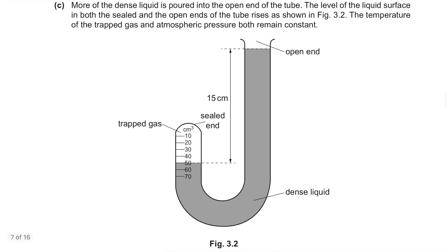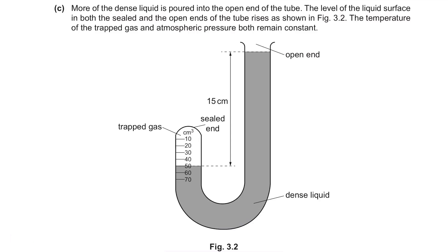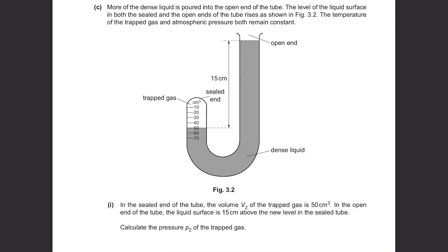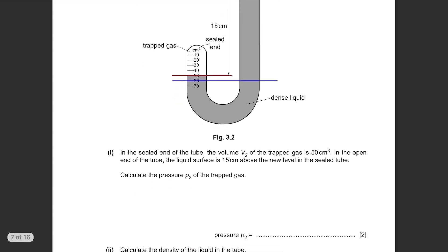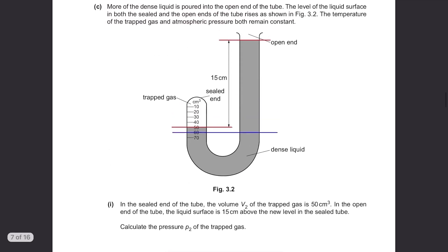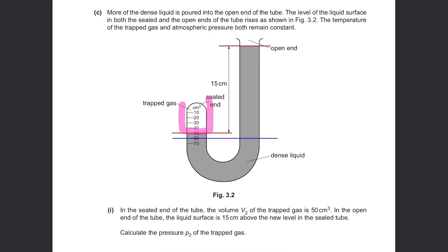Part C. More of the dense liquid is poured into the open end of the tube. The level of the liquid surface in both the sealed and the open ends of the tube rises as shown in figure 3.2. The temperature of the trapped gas and the atmospheric pressure both remain constant. The levels increased from this to this. In the sealed end of the tube, the volume V2 of the trapped gas is 50 cm3. In the open end of the tube, the liquid surface is 15 cm above the new level in the sealed tube. Calculate the pressure P2 of the trapped gas. Alright, sounds confusing because it's a long question but we can sort it out. Just focus on the before and after of this part of the tube.